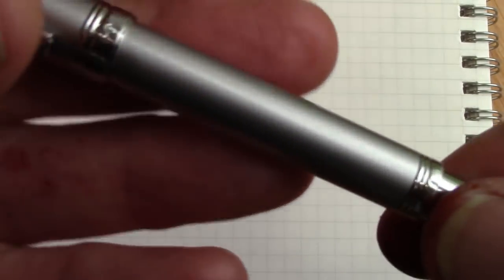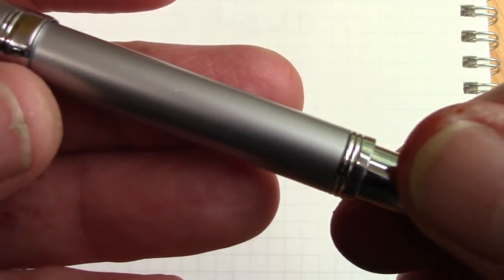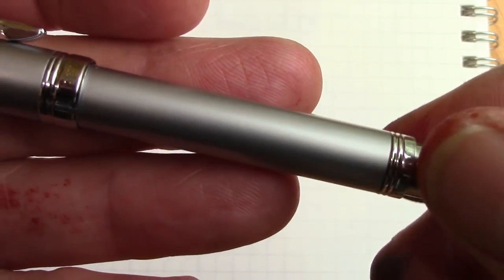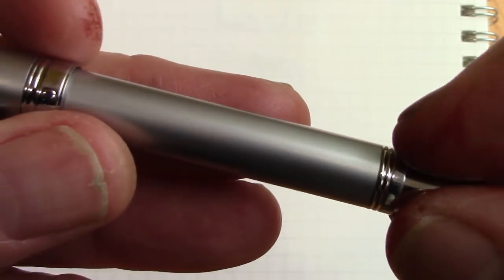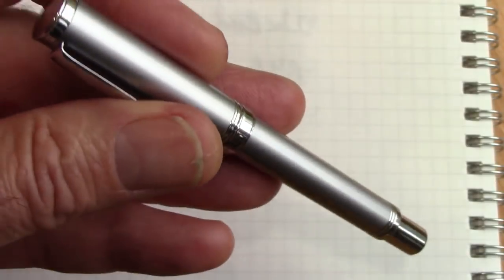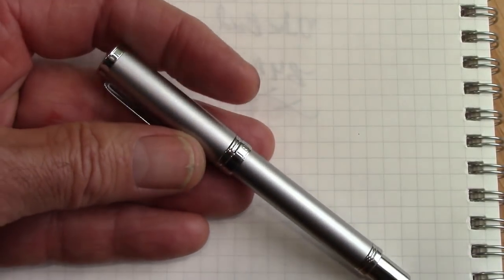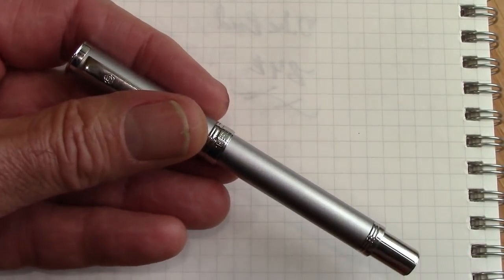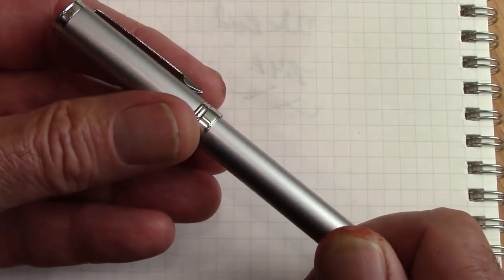The finish does show signs, they're not going to show up on the camera but it does have a little bit of softness to it. So if you put this in your pocket without putting it in some type of protection you're probably going to mar the finish which is not something you may want to do.